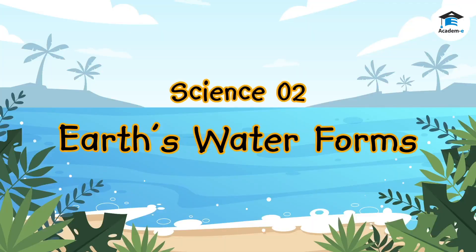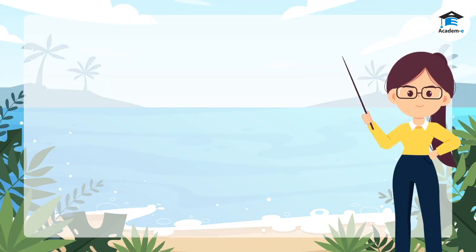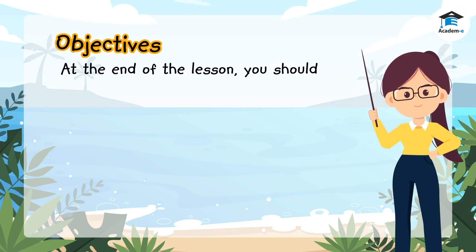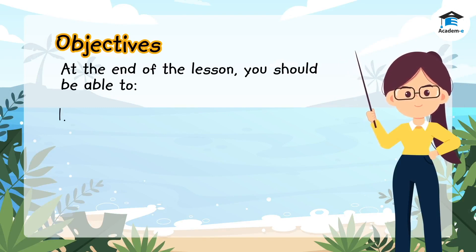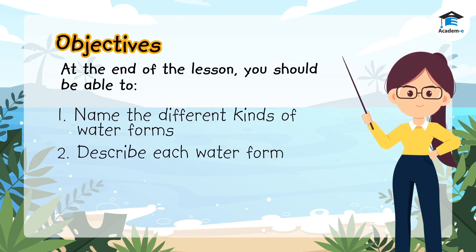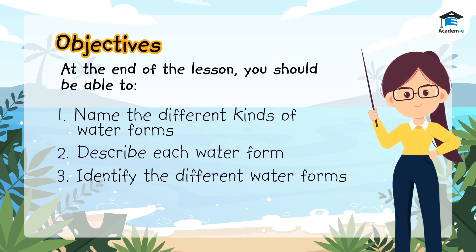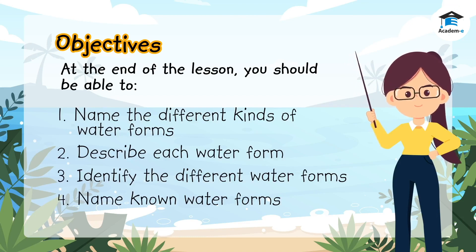Science 2: Earth's Waterforms. Objectives: at the end of the lesson you should be able to name the different kinds of waterforms, describe each waterform, identify the different waterforms, and name known waterforms.